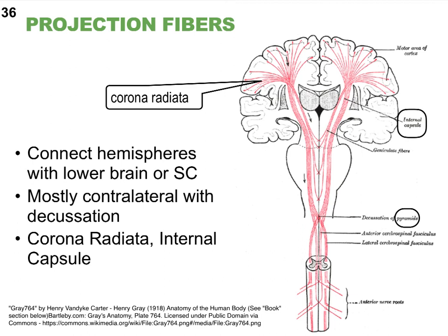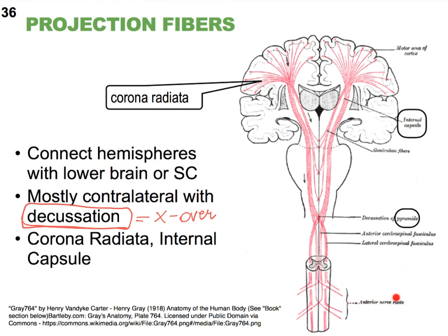This is a nice image to illustrate what we call decussation — literally meaning crossing over. Following fibers: starting in one hemisphere, tracing down, leaving the brain, entering the spinal cord, and then reaching the opposite side of the spinal cord. This tells you that many fibers start on one side of the brain — say the right hemisphere — but end up controlling the opposite side of the body.